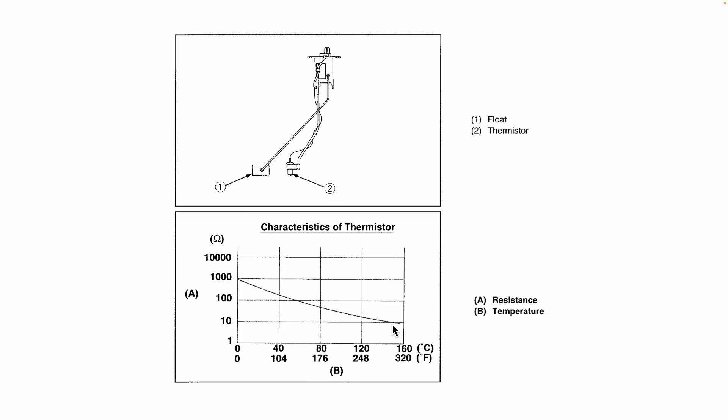As a result, the resistance drops considerably. Remember, the thermistor is in series with the bulb, so when the thermistor has low resistance, there's high current flowing through it and the bulb, and as a result, the bulb illuminates.